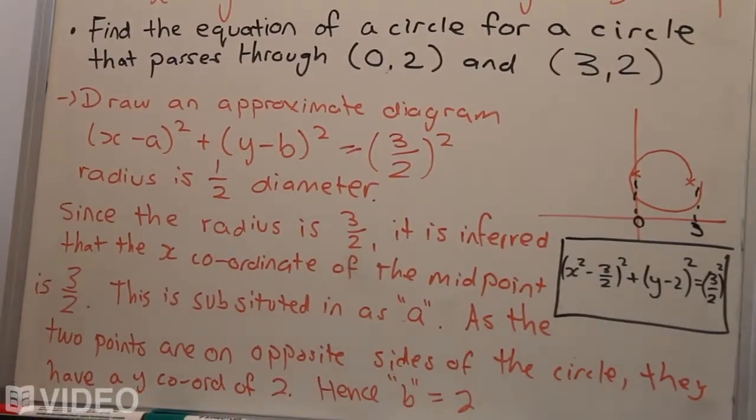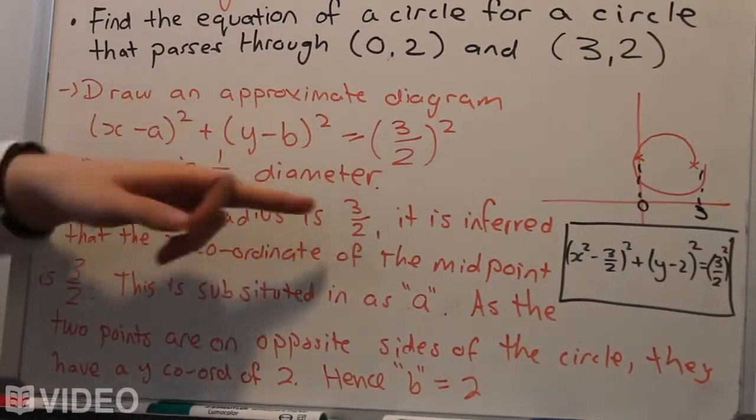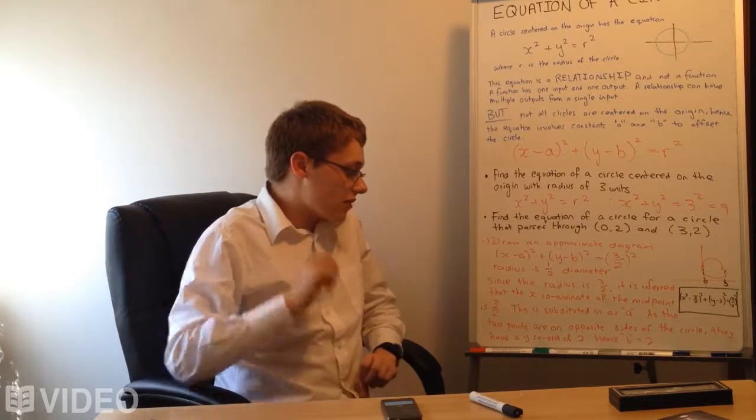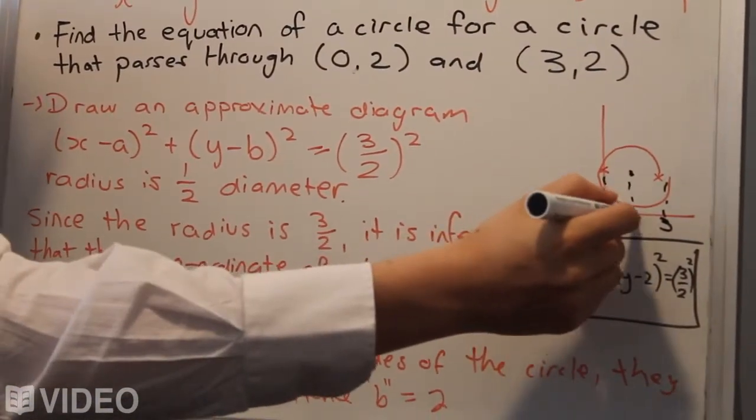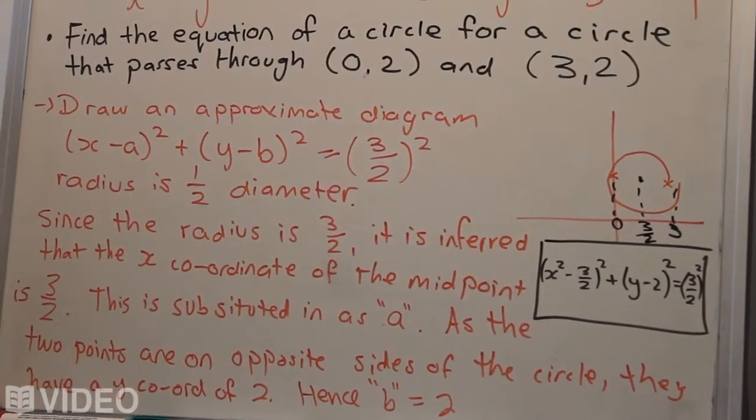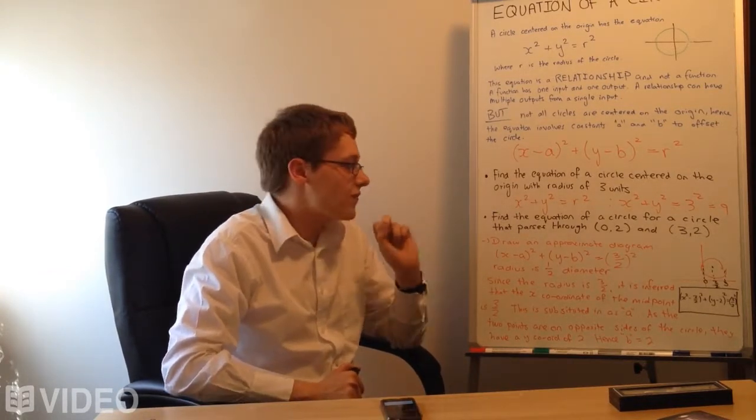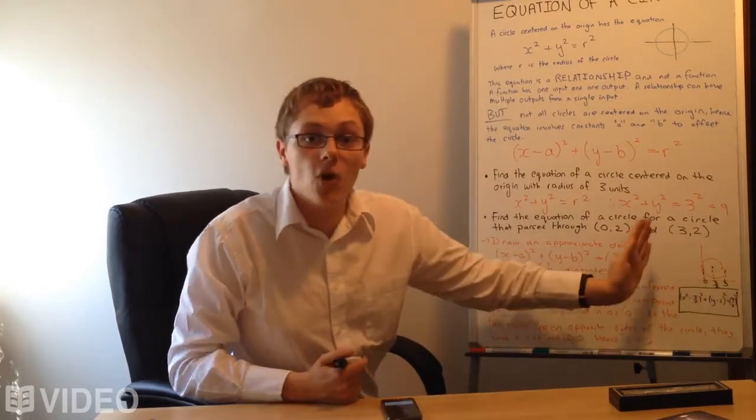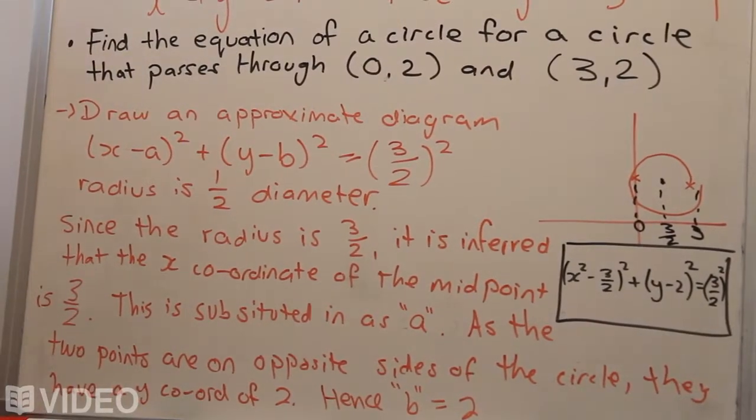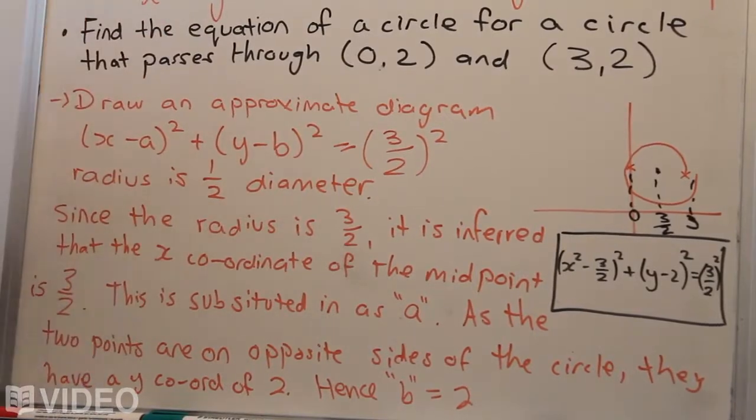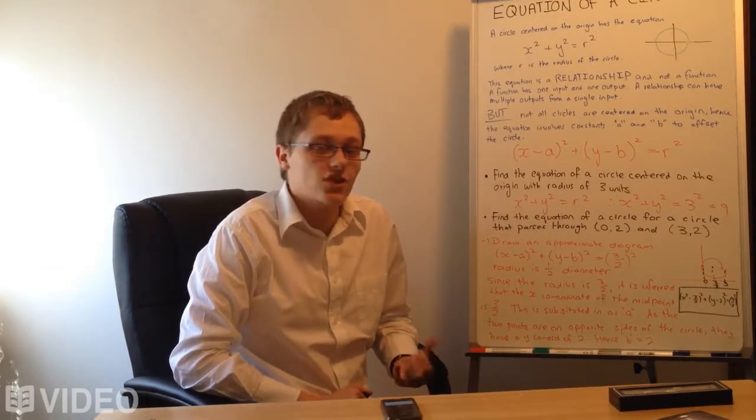Now, generally, you would look at the midpoint here. However, for this actual question, it's a little bit easier. We know that the radius is 3 on 2. So we can infer that the x-coordinate of the midpoint is 3 on 2. It's quite straightforward, because we know the midpoint would obviously be there. And because this is 0, and it's halfway in between, we know that the center of the circle actually has 3 on 2 as the x value there. So we substitute this 3 on 2 as a value of a, because that's how much it's offset to the right. When we substitute a into the equation, it's going to be take 3 on 2. Of course, you could use a midpoint formula that we covered in previous episodes, if it's a bit harder. In this case, we've got a coordinate point with 0, so it's really easy.